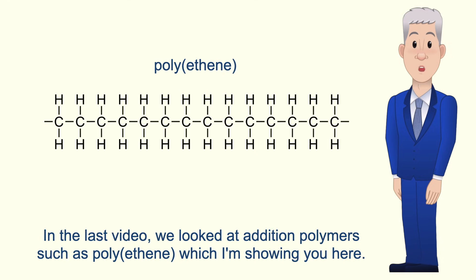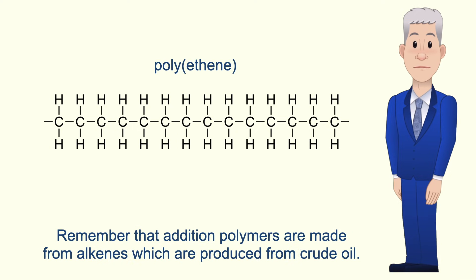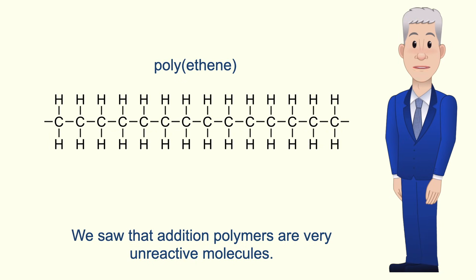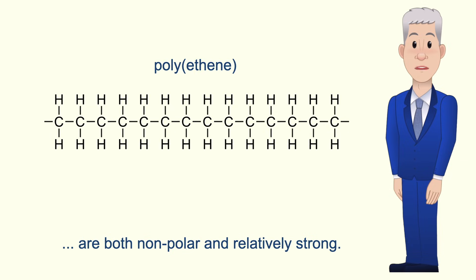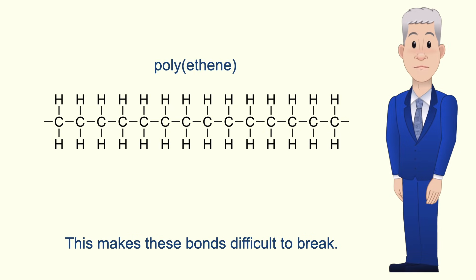In the last video we looked at addition polymers such as polyethene, which I'm showing you here. Remember that addition polymers are made from alkenes which are produced from crude oil. We saw that addition polymers are very unreactive molecules because the carbon-to-hydrogen and carbon-to-carbon bonds are both non-polar and relatively strong, making these bonds difficult to break.